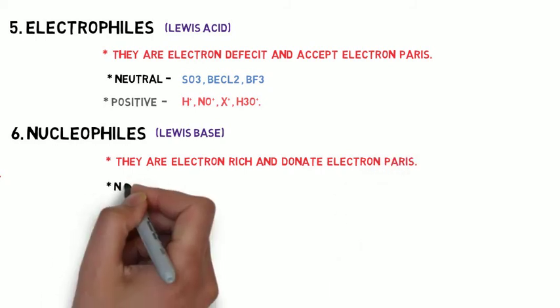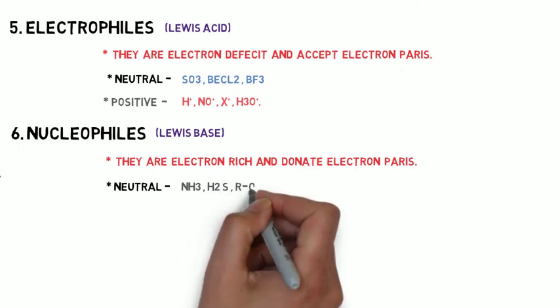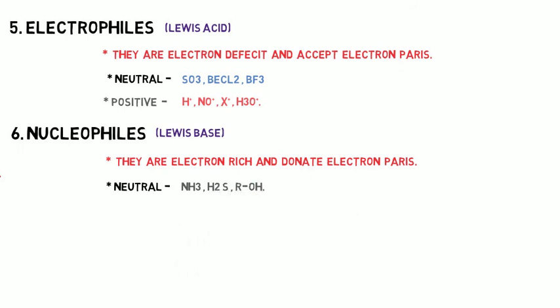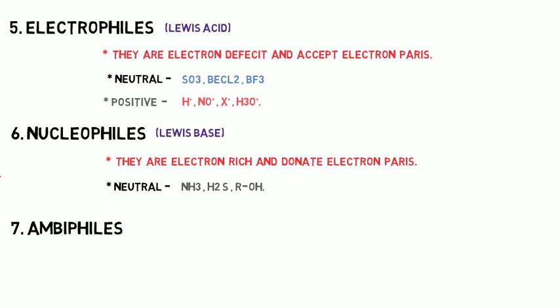Some neutral nucleophiles are given as examples: NH3, H2S and ROH. The last one is amphiles. They behave as both electrophiles and nucleophiles.